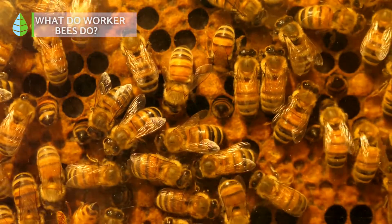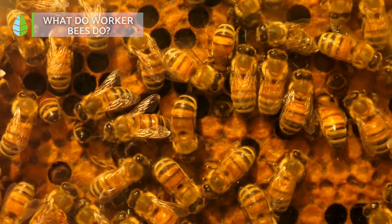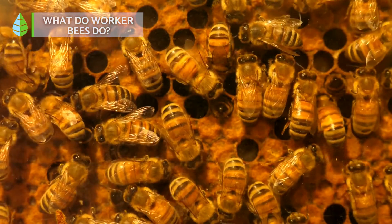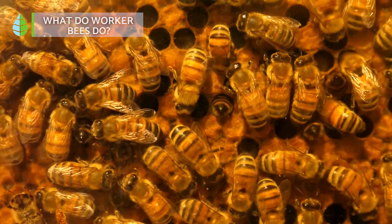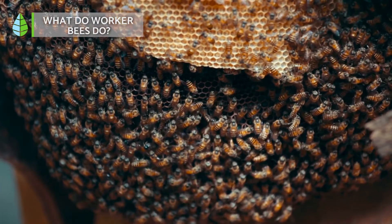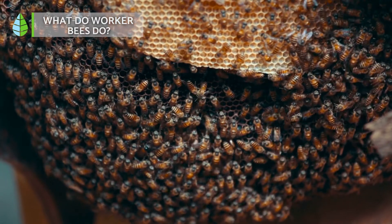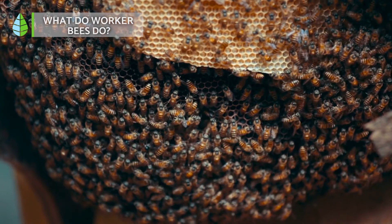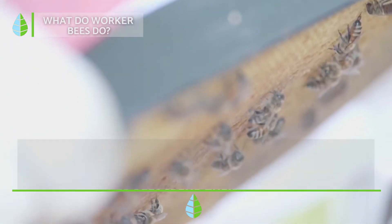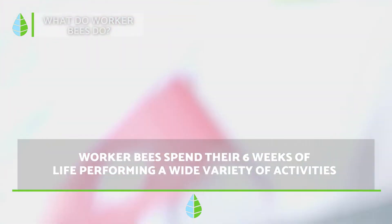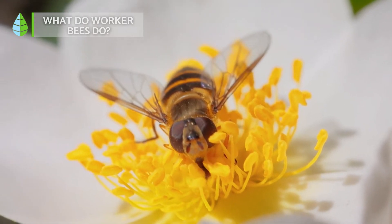What do worker bees do? All worker bees are female and divide their activities according to age. Before day 21, they perform activities inside the hive, such as building hexagonal wax cells, feeding larvae with bee bread and cleaning the hive, producing royal jelly as nurses, storing food stores, defending the entrance to the comb and ventilating. After the first 21 days, their wax glands atrophy from all the work, so they go outside to collect water, pollen and plant nectar.